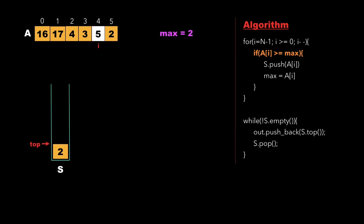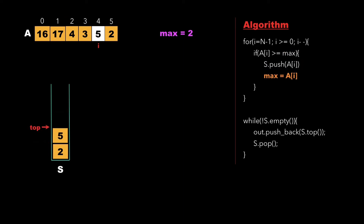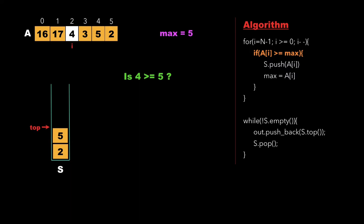Now i points to the fourth index, the value 5. We check whether 5 is greater than or equal to 2, and since 5 is greater than 2 we push 5 into the stack, then update max as 5 and decrement i. Now i points to index 3, and we check whether 3 is greater than max — since it is not, we decrement i. We check whether 4 is greater than 5 — since it is not, we decrement i again.